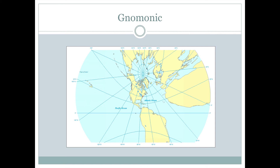A gnomonic map projection is a very different thing. As you can see from this display, it looks very distorted, but it does have a very special property: all great circles on the globe are represented as straight lines on this map.